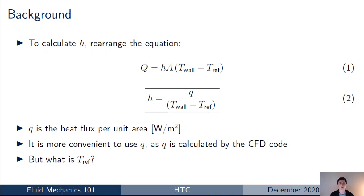What is commonplace in this formula is that we've replaced capital Q — that's the heat flux — by the heat flux per unit area, which I've denoted by lowercase q. It's common to use the definition in equation two to calculate the heat transfer coefficient, mostly because it's convenient since CFD codes will often compute the heat flux per unit area and output that in the post-processor. In this formula we've got on the denominator T_wall for the wall temperature and T_ref for the fluid temperature.